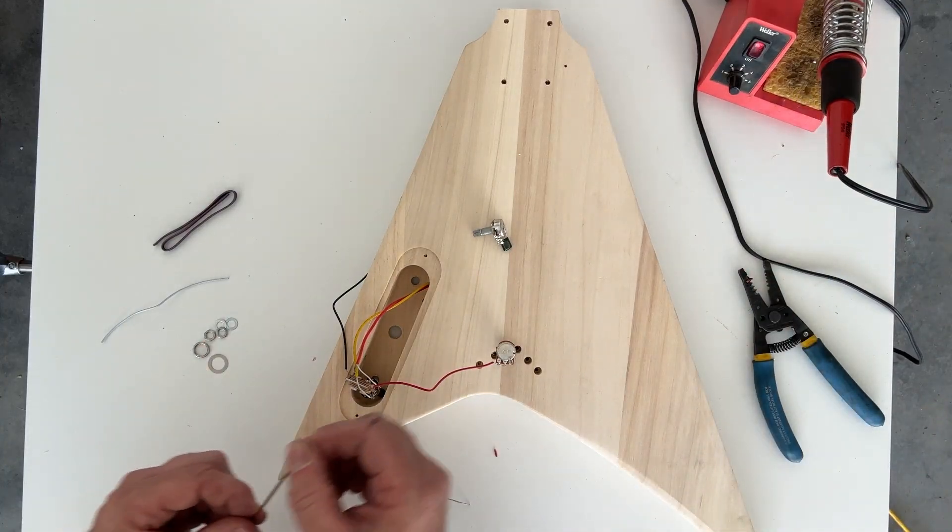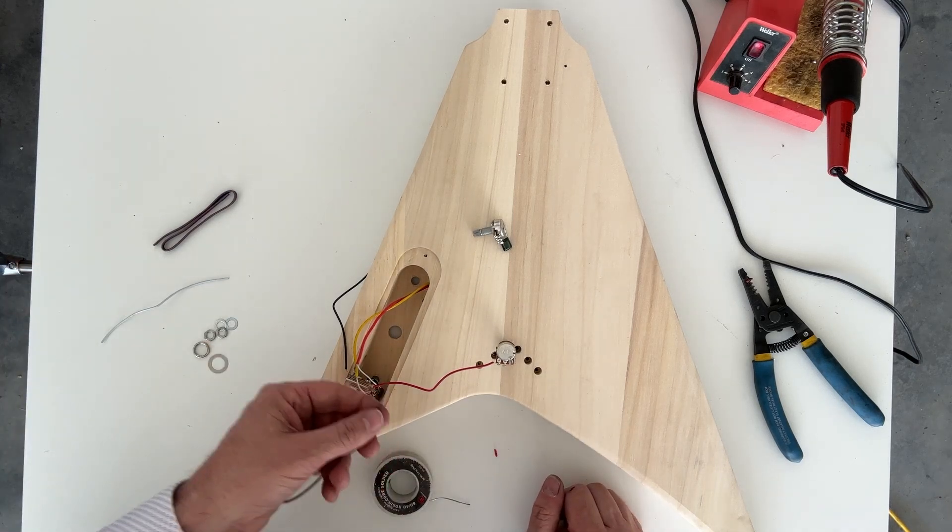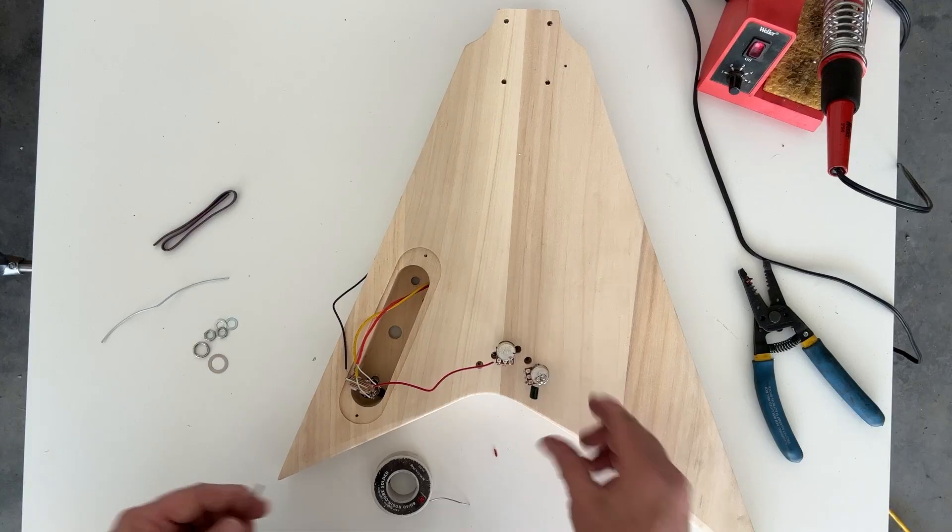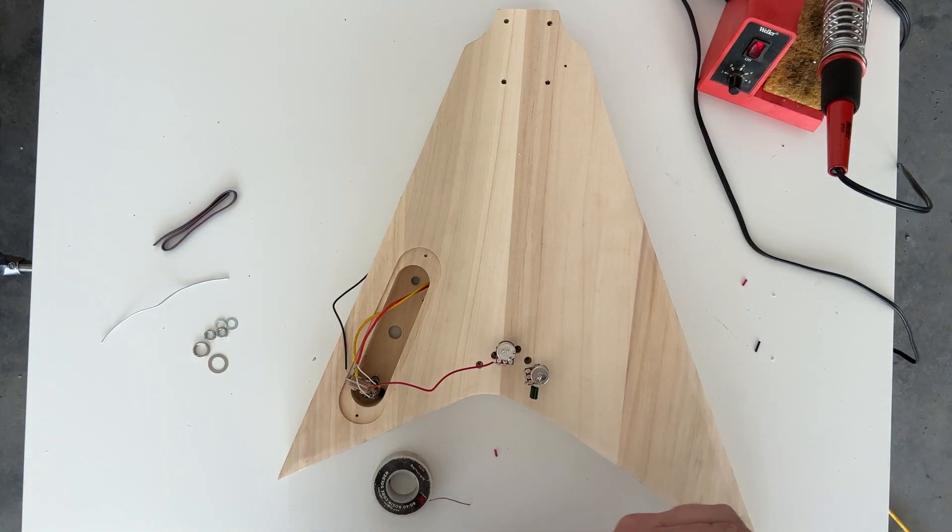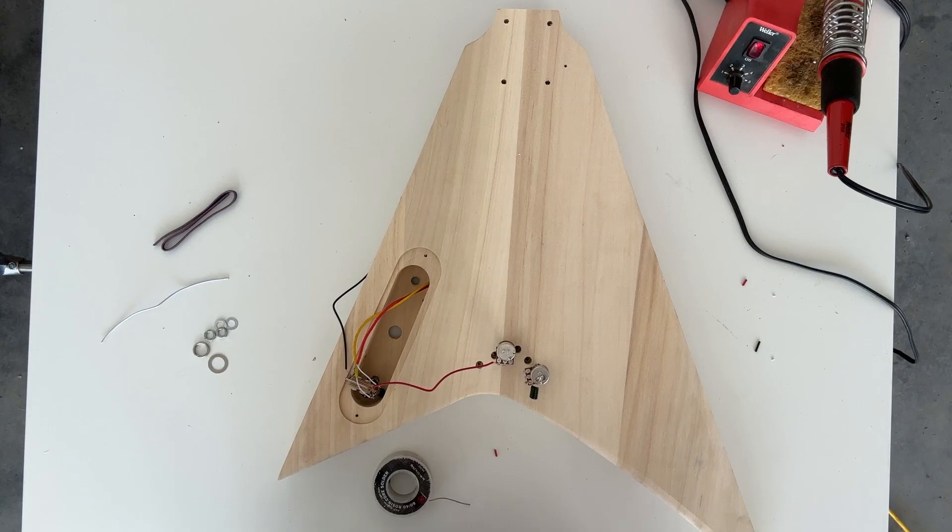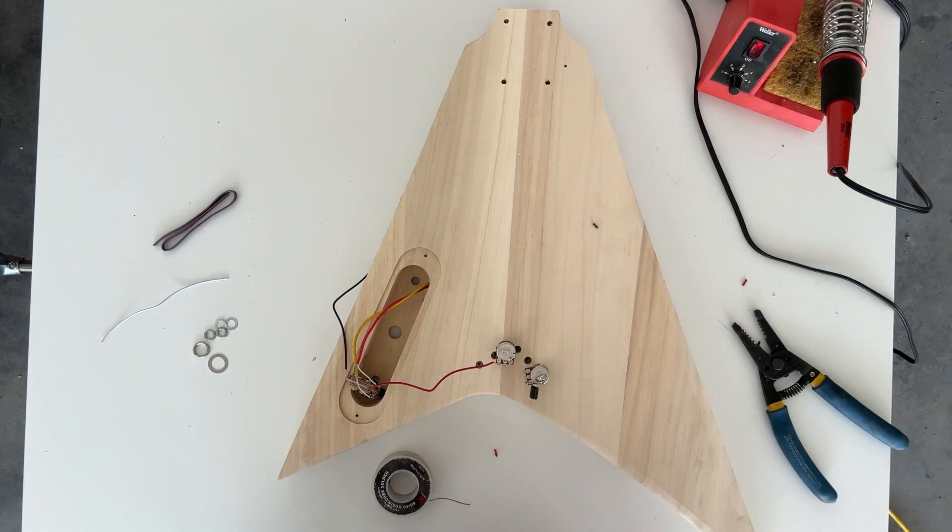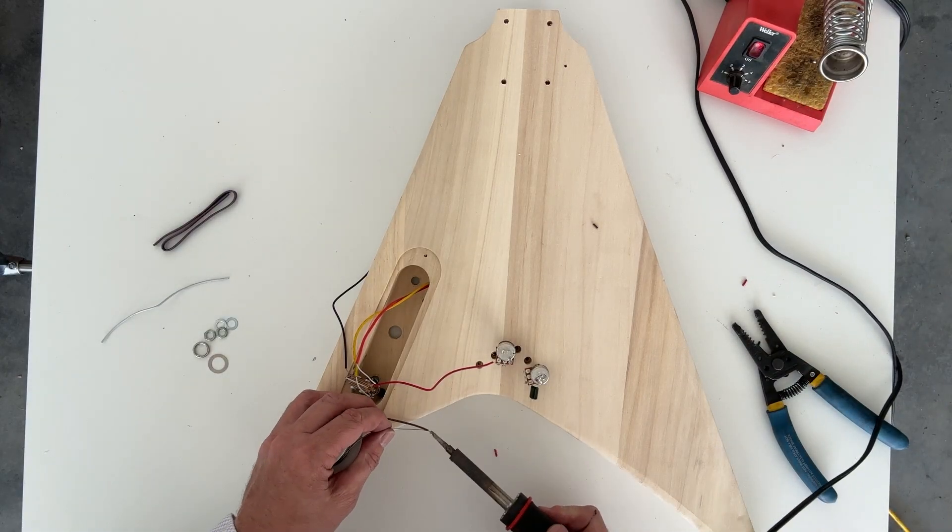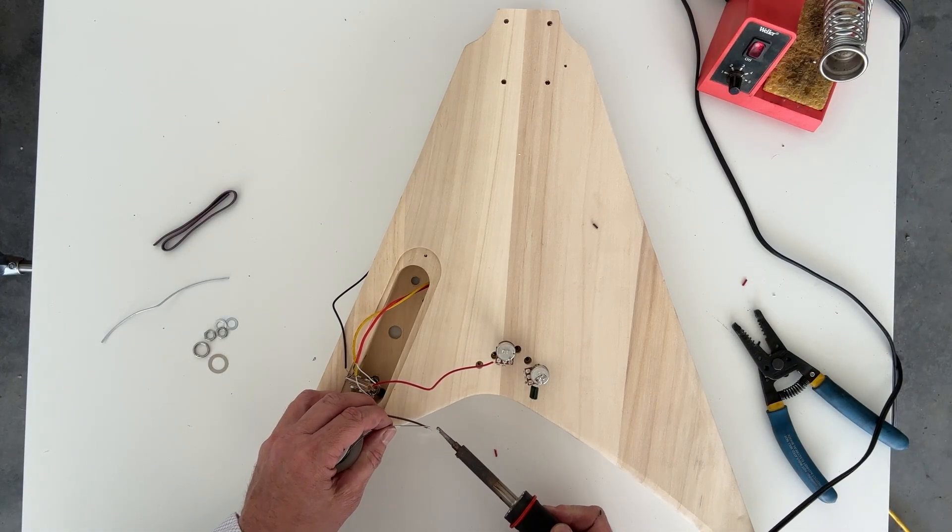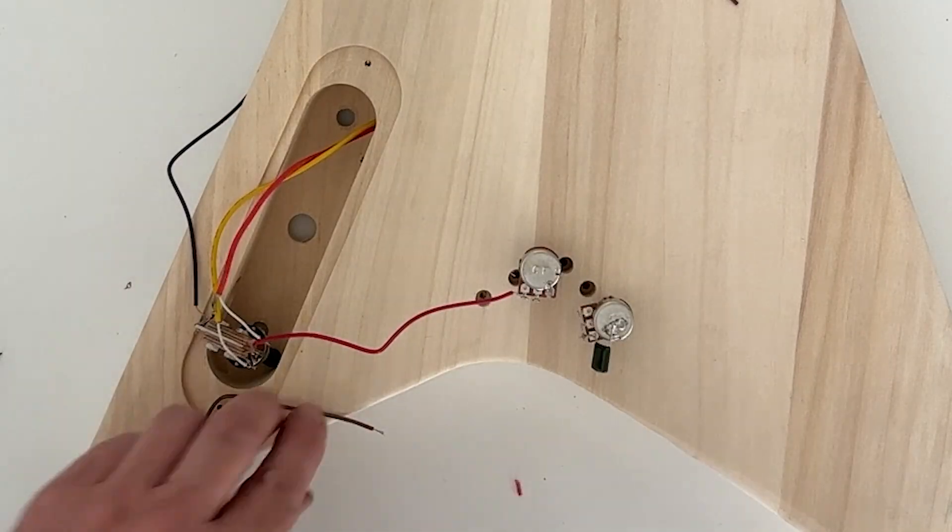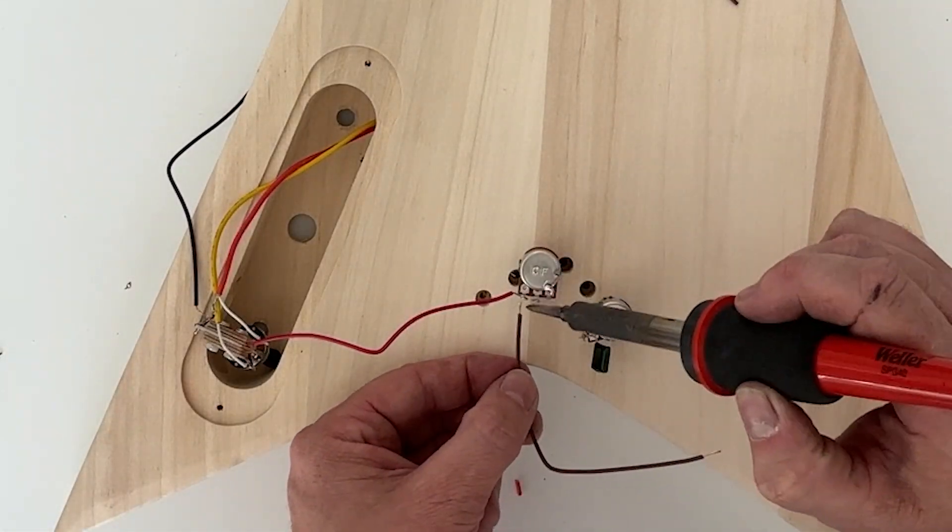Then we need another wire that's going to go from that same lug to the center lug on the tone. Now, colors don't matter a ton in guitar wiring like they might in other spots. There's a couple instances where colors are standardized, but for the most part, manufacturers haven't standardized on colors for any given type of connection, so feel free to use whatever makes sense for you and your project.